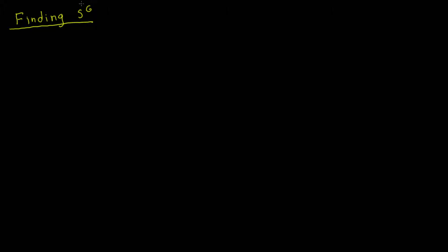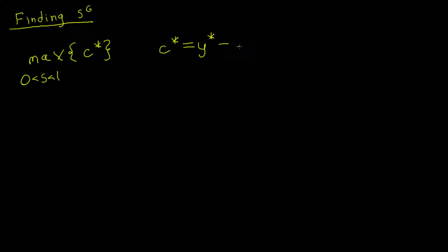Now let's find the analytical solution for the golden rule savings rate. The problem we are solving is maximizing consumption per capita in a steady state by choosing the savings rate, which must be strictly between zero and one. Writing out the objective function, consumption per capita in a steady state equals GDP per capita minus investment per capita. Furthermore, in a steady state, investment equals depreciation, so investment equals delta times capital per capita.